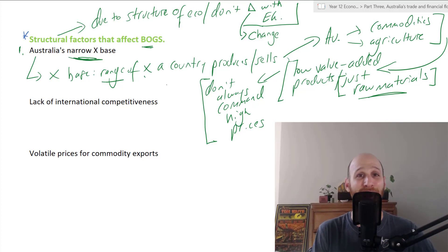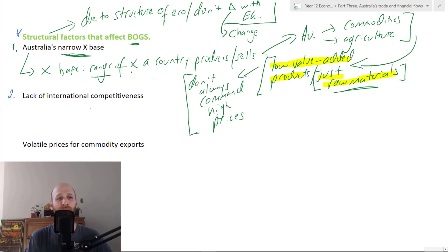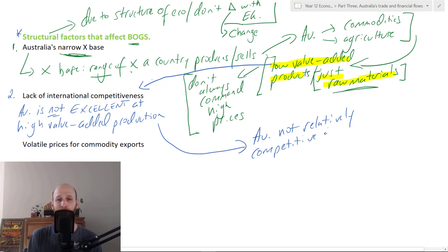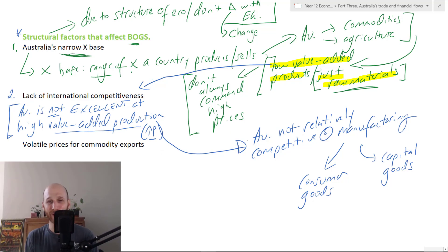A second and related factor to this idea of value-added is that Australia lacks international competitiveness in high value-added production. So Australia is not excellent - okay, that's not the most articulate way of expressing it, but I think you might remember it. Australia is not excellent at high value-added production, and when we talk about high value-added production, we're talking about the stuff that you can get lots of money for, high prices for.